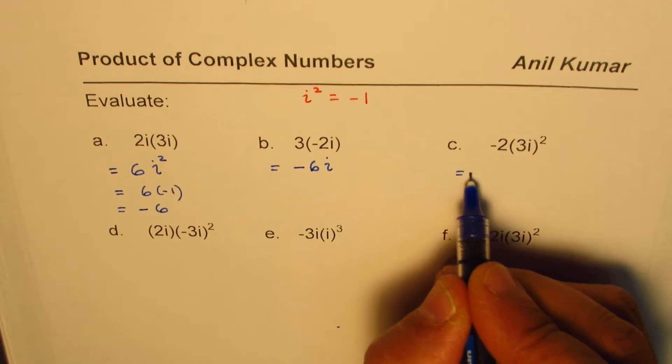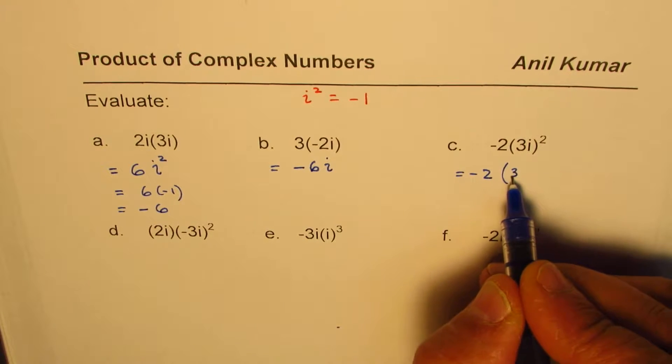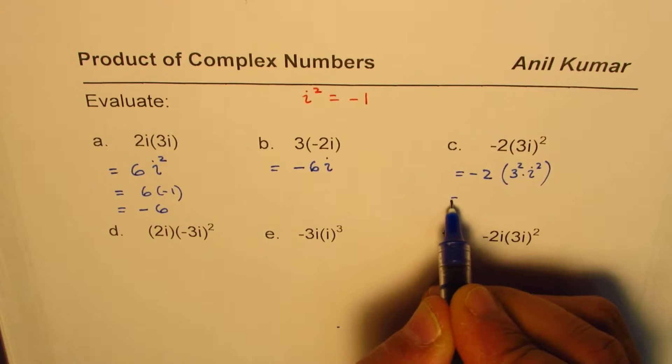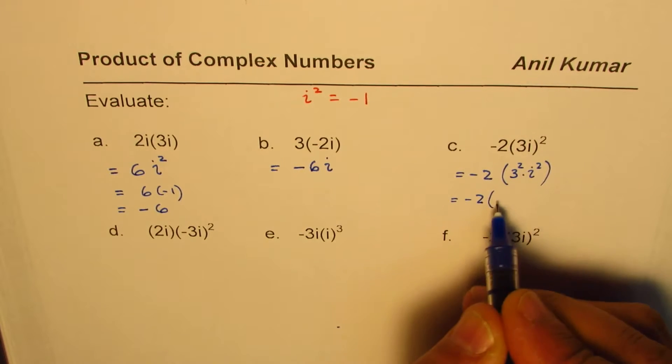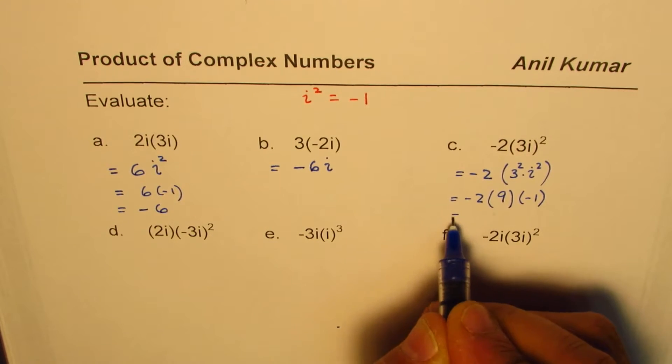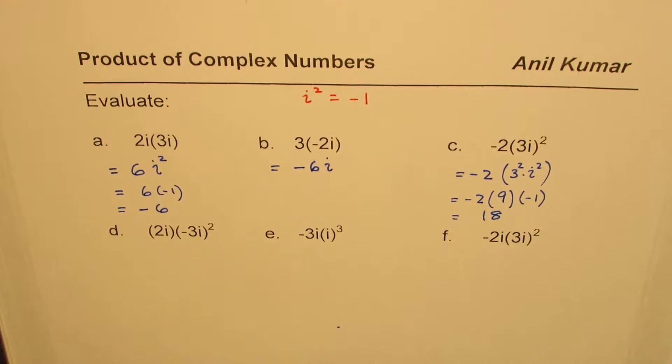Here, -2 times (3i)². Square of 3i is 3² times i². So we get -2 times 3² which is 9, and i² is -1. When you multiply minus and minus, you get a positive number: 2 times 9 is 18.